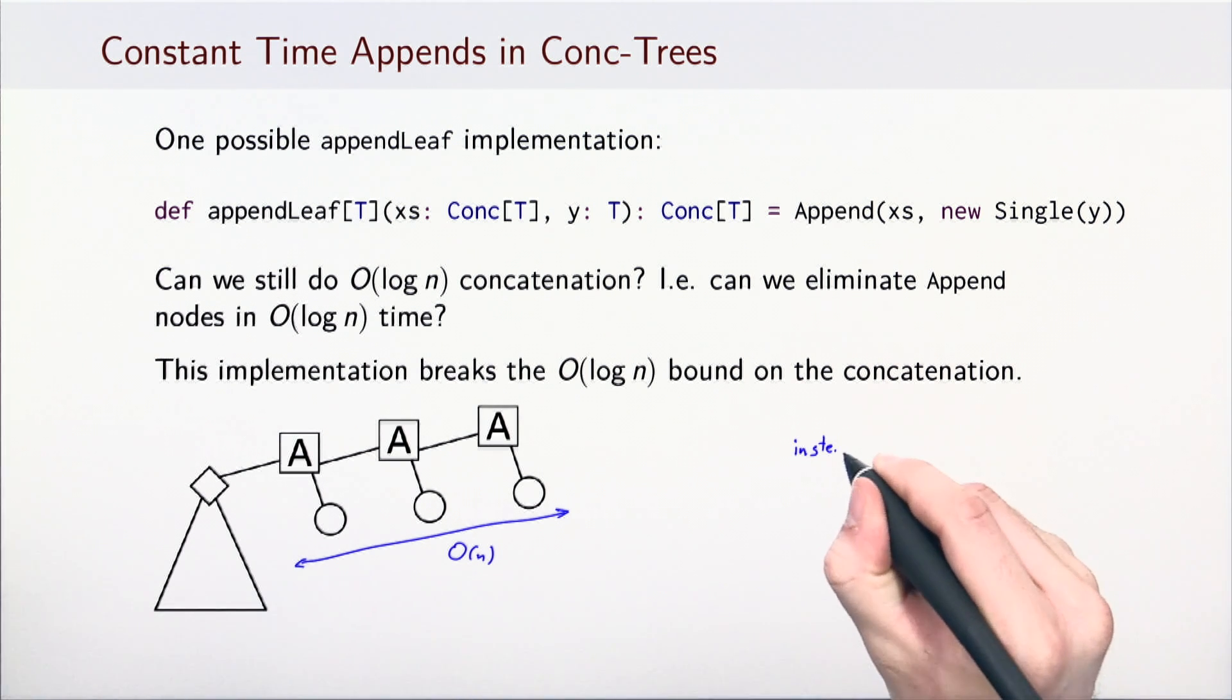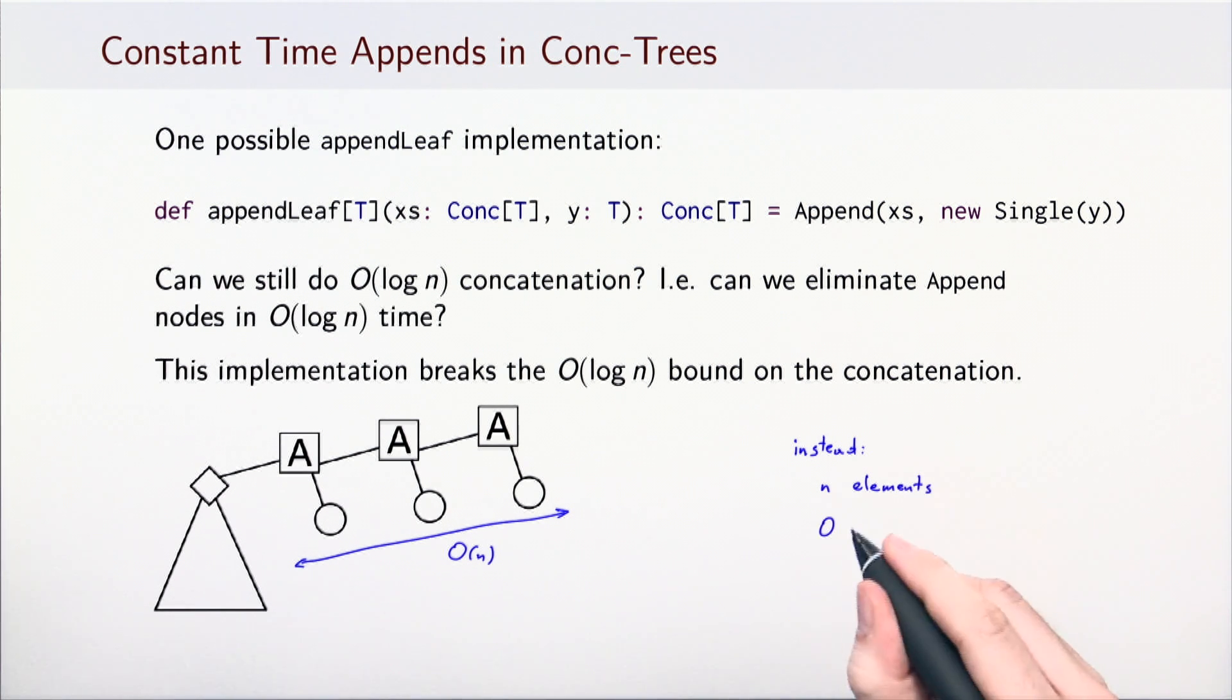In what follows, we will make sure that, if the total number of elements in the tree is n, then there are never more than log n Append nodes in the data structure. To understand how to achieve this, let's consider a seemingly unrelated task that we know very well, and that is, counting in a binary number system.